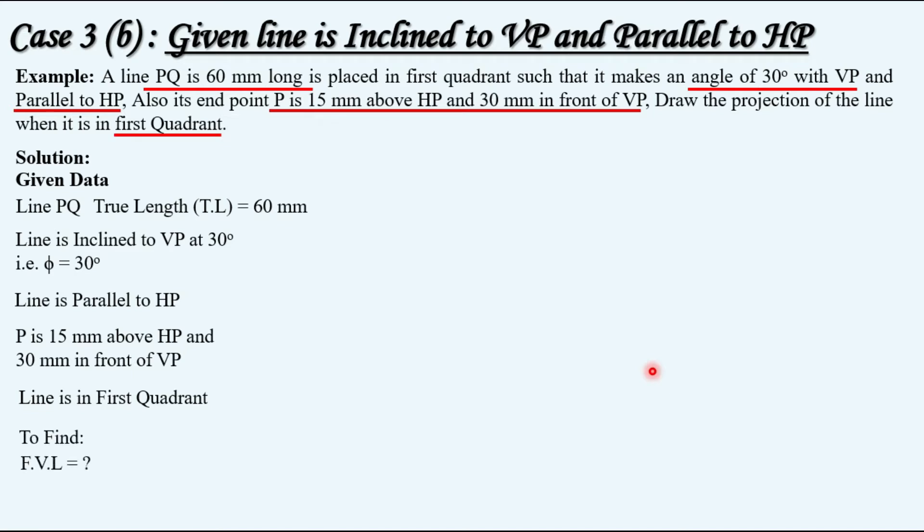What is required to find? Front view length is to be found out. Visualizing the question: these are the horizontal and vertical planes. We are looking from this direction and we are in the first quadrant, that is above HP and in front of VP.